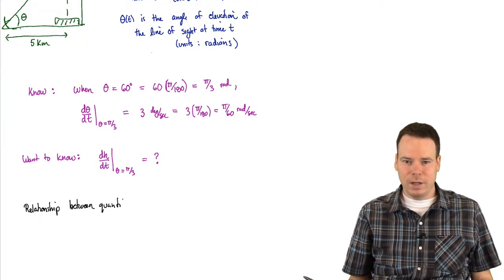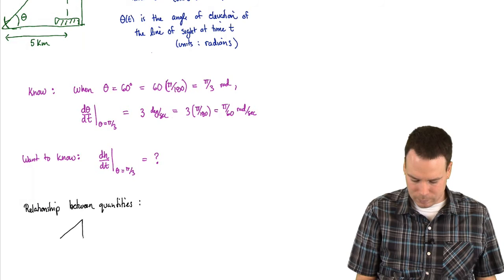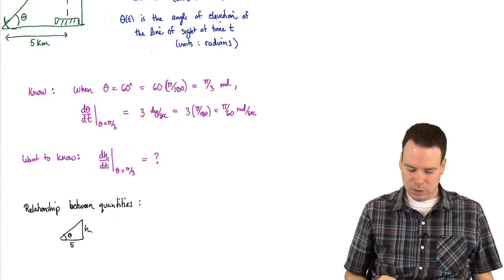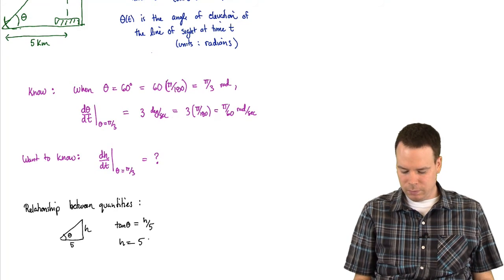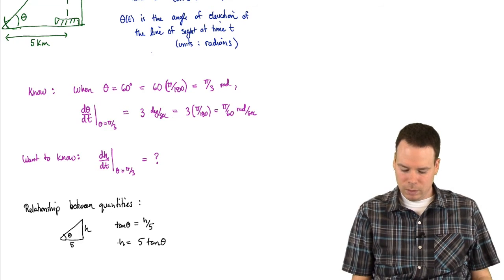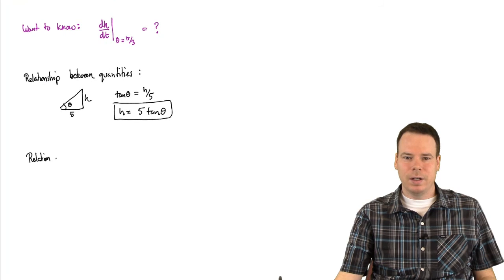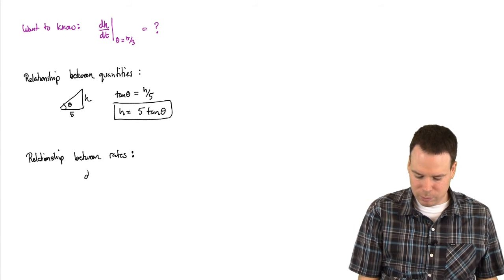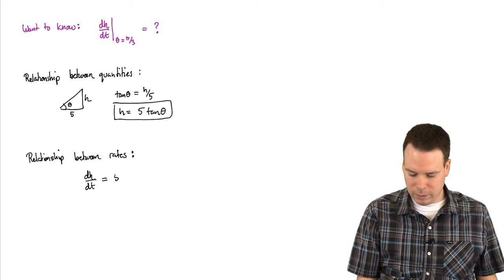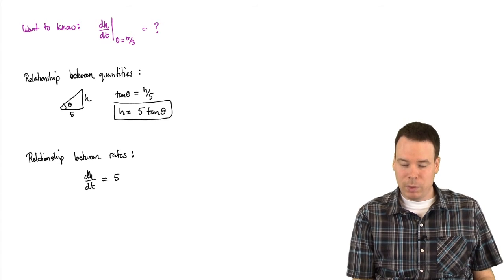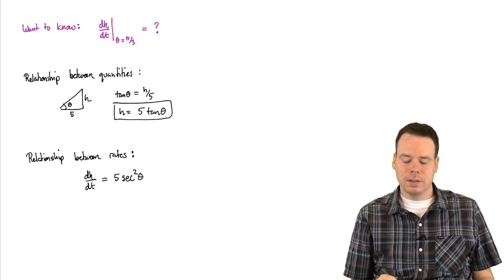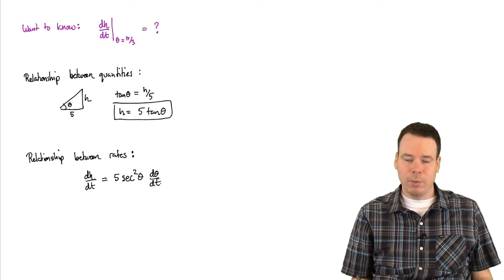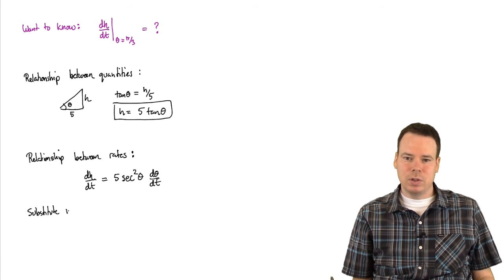Now we find a relationship between the quantities using the diagram. We have theta, 5, and H, and the geometric relationship is the tangent function: tan(theta) = H/5, or equivalently H = 5·tan(theta). Differentiating with respect to T using the chain rule: dH/dt = 5 · sec²(theta) · d(theta)/dt, since theta is a function of T, so the outside function is tangent (derivative is secant squared) times the derivative of the inside.